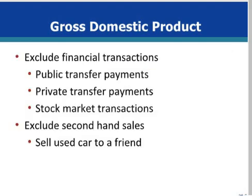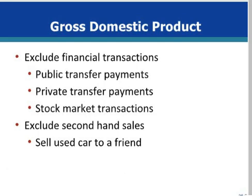Non-production transactions must be excluded from GDP, since they have nothing to do with the production of final goods. There are two types: purely financial transactions and second-hand sales. Purely financial transactions include such items as public transfer payments like Social Security, private transfer payments like Christmas gifts, and stock market transactions. Second-hand sales contribute nothing to current production, so they are ignored in calculating GDP.